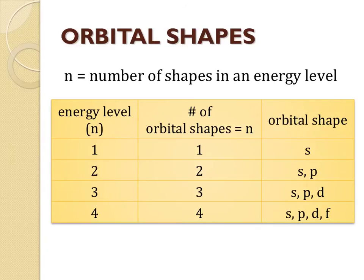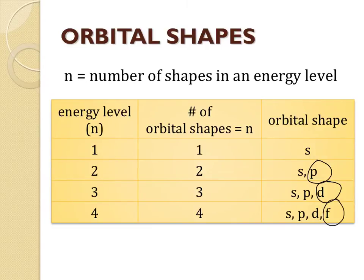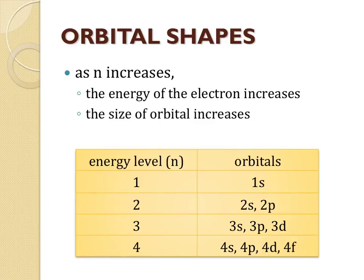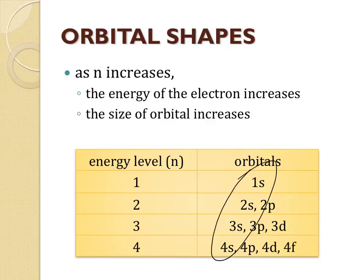Our value for n will tell us how many orbital shapes we can have in each energy level. In the first energy level we can have one shape — the S shape. In the second energy level we can have two shapes, so we add P. In the third energy level we can have three shapes, so we add D. In the fourth energy level we have four shapes, and this is where we add F. Since all energy levels have an S shape orbital, to distinguish them we put the energy level number in front: 1s, 2s, 3s, and 4s. As the energy level increases, the electron has more energy and can travel farther from the nucleus, allowing for a larger sphere-shaped orbital. The 4s orbital is larger than the 3s, 2s, or 1s, even though they're all spherical.